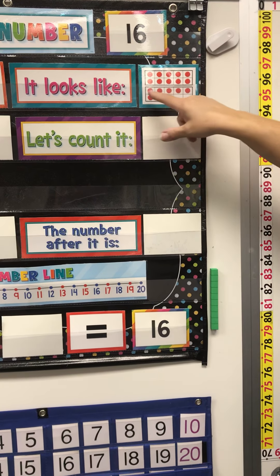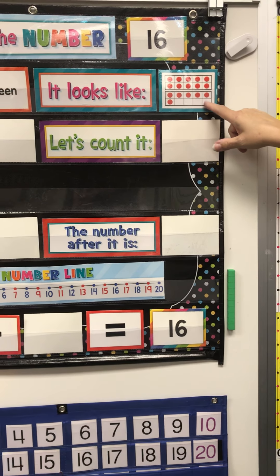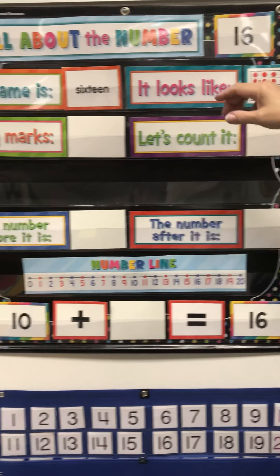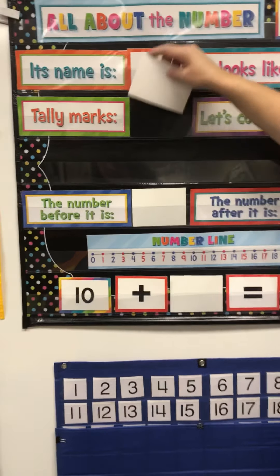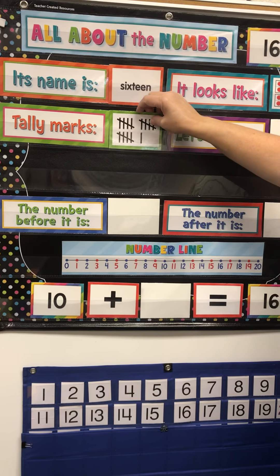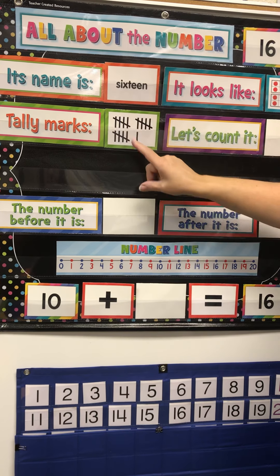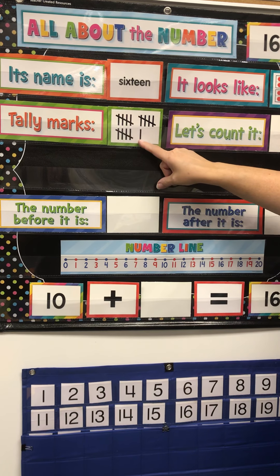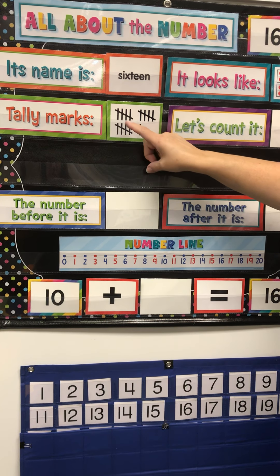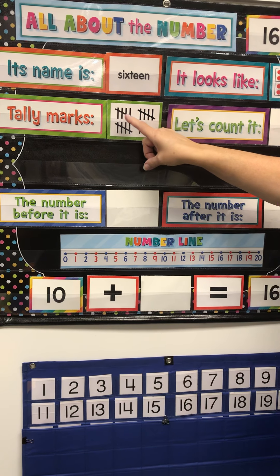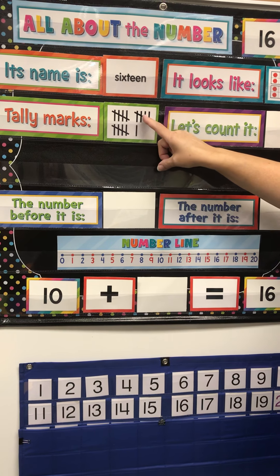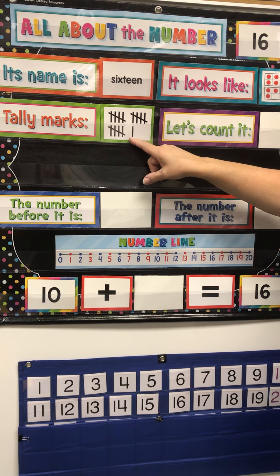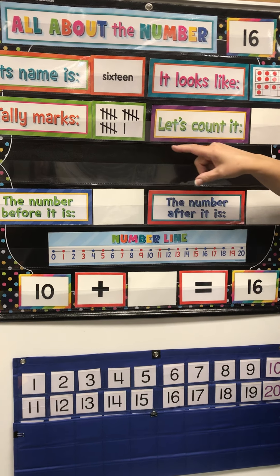10 and 6 more make 16. When we have 16 tally marks, we have 3 groups of 5 and 1 more. When we count by 5s: 5, 10, 15 — and 1 more makes 16.